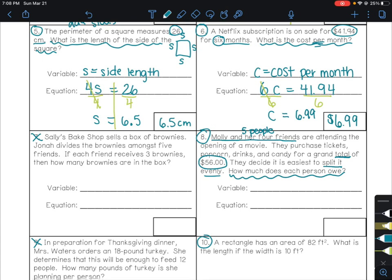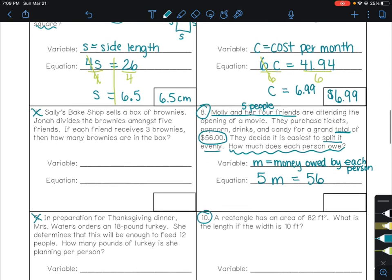We could say M equals money owed by each person. Now start with your variable. There's five friends all together. And we know the total that they paid. So if you think about the money that each person paid and that there's five people, if you want the total, you have to add up the money that each person paid. But since they all paid the same thing, we can use multiplication. So five times M, five times the money that each person owes equals $56. I'm not going to put the decimal point in the zeros because we don't need them.